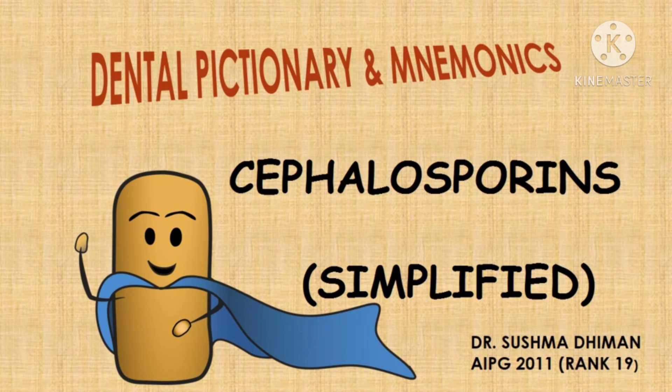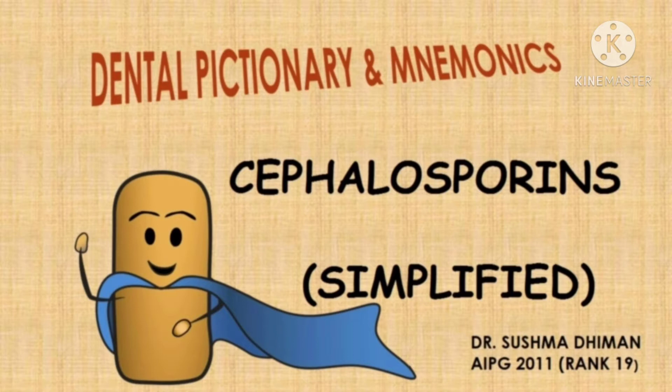Cephalosporins are a group of semi-synthetic antibiotics which are chemically related to penicillins. Cephalosporins have been conventionally divided into five generations. This division has a chronological sequence of development but more importantly takes into consideration the overall antibacterial spectrum as well as the potency of drugs in various generations.